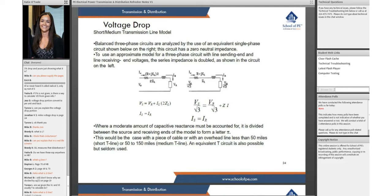The line sending end and line receiving end voltages, the series impedance, is doubled as shown in the circuit on the left. In our first circuit, you see that our Vs is equal to our VR plus our IL to ZL, and our sending end voltage is going to equal our receiving end voltage.